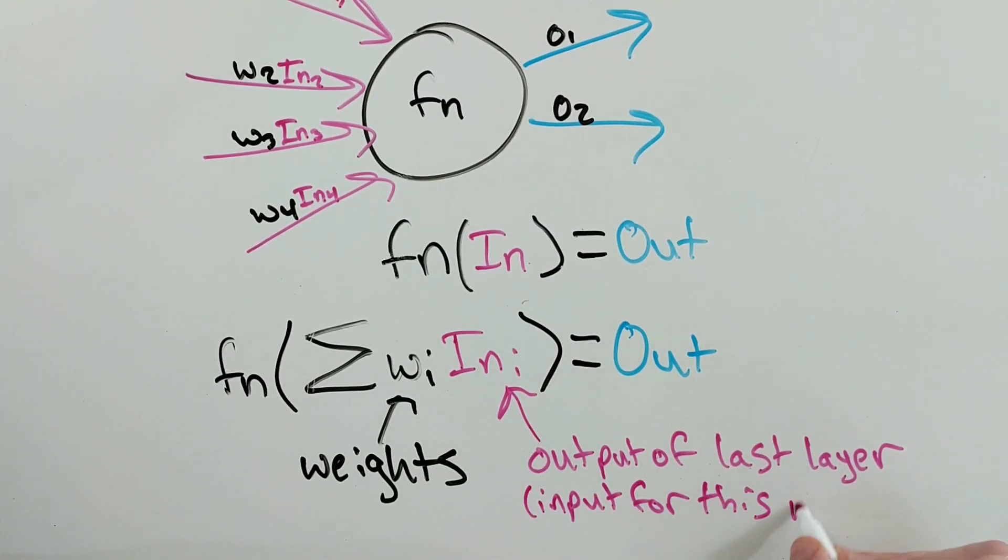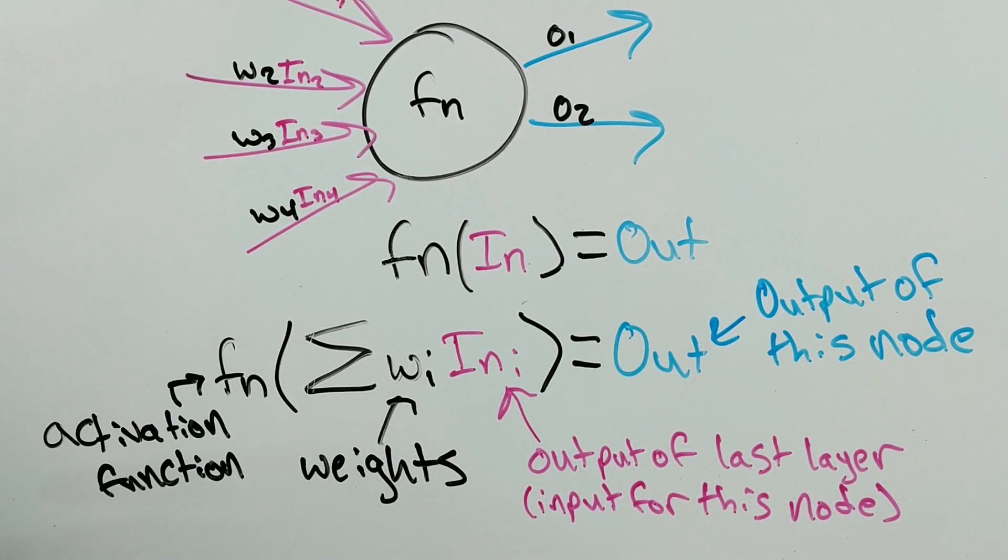Altogether, the output for a single node is just the activation function of the sum of the weighted inputs.